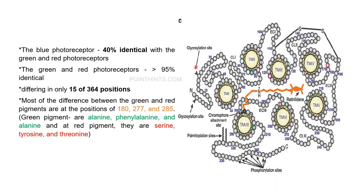Green and red photoreceptors are 95% identical, but differences at certain positions cause them to absorb different colors of light. There are 15 out of 364 positions that differ between green and red photopigments. The most significant differences are at positions 180, 277, and 285. The green pigment has the sequence alanine, phenylalanine, and alanine at those positions, whereas the red pigment has serine, tyrosine, and threonine.